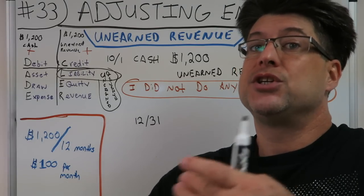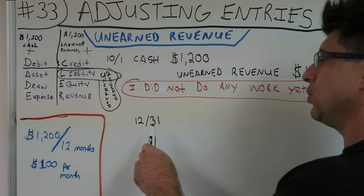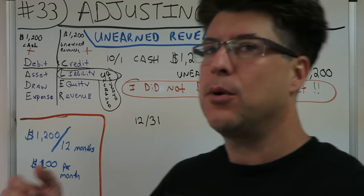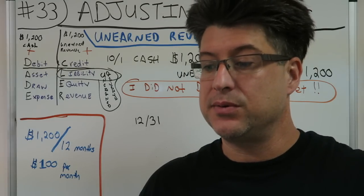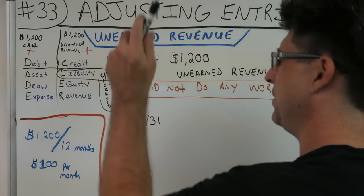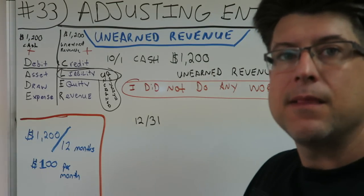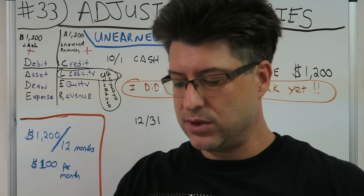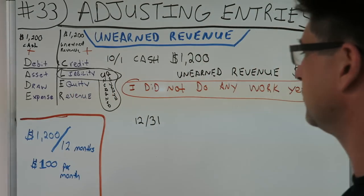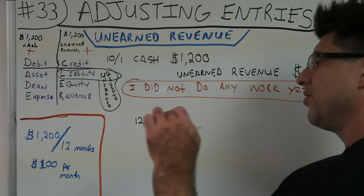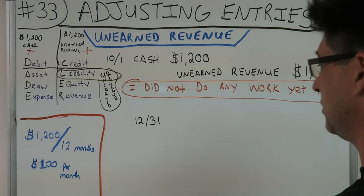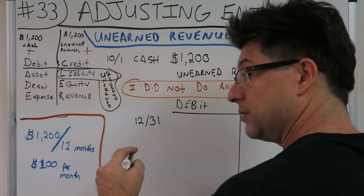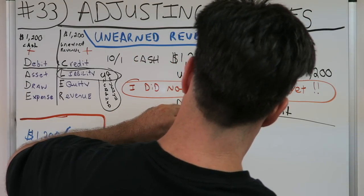Now we're adjusting for the end of the year — December 31st. We need to figure out per month: we got paid $1,200 for 12 months, that's $100 per month. How many months from October 1st to December 31st? October, November, December — three months. Three months at $100 per month equals $300. So our adjusting journal entry is for $300.